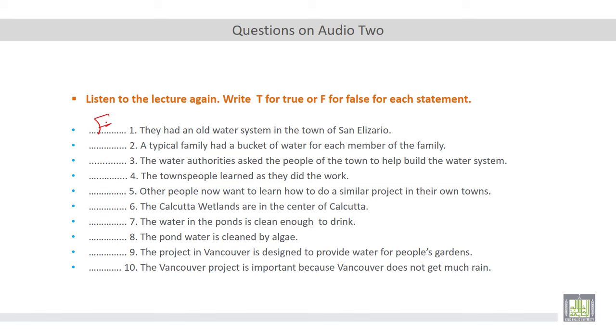Okay. Number two. A typical family had a bucket of water for each member of the family. What do you think? According to the lecture, this statement is false because a typical family had two buckets. Two buckets of water. Okay.